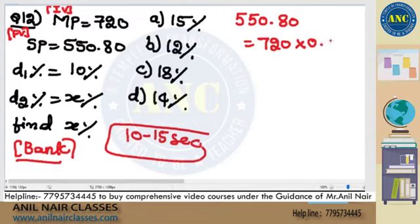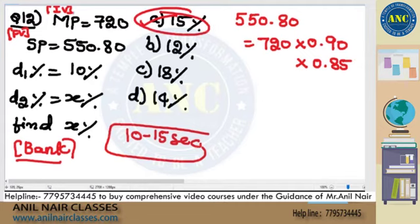First discount is 0.9. I will go by the answer option. If it is 15% discount, it is 0.85. Answer is 15%. How much time it takes?